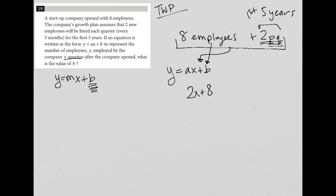So here's my equation: Y equals two X plus eight. And again, the question is asking for the value of B, so B is eight. And that is my final answer.